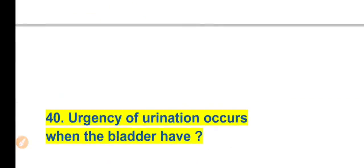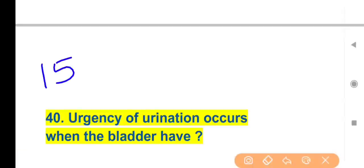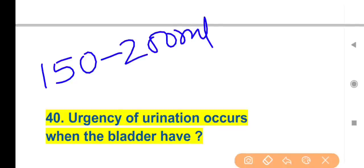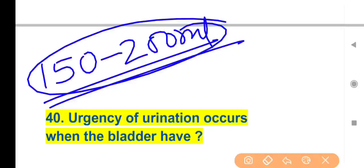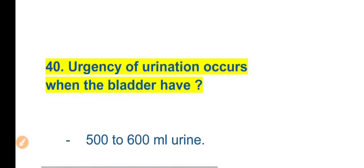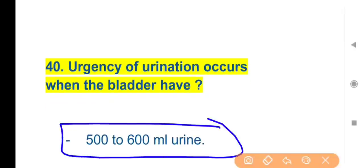Question 40: Urgency of urination occurs when the bladder has how much urine? The right answer is 500–600 ml. When 500–600 ml of urine is in the bladder, the patient feels urgency — they must urinate immediately. Recall: the urge to urinate first occurs at 150–200 ml.